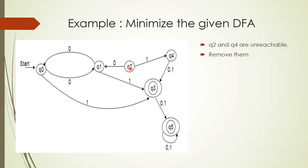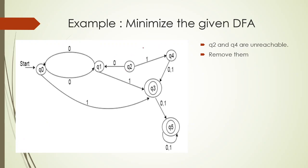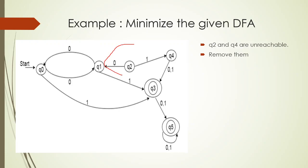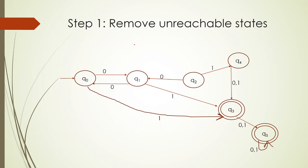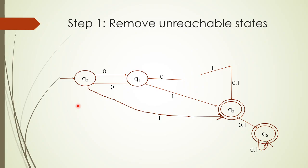States Q0, Q1, Q3, and Q5 are reachable states. States Q2 and Q4 are unreachable — they cannot be reached from the start state. So Q2 and Q4 are unreachable and we remove them along with their transitions.